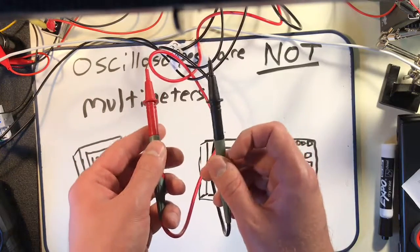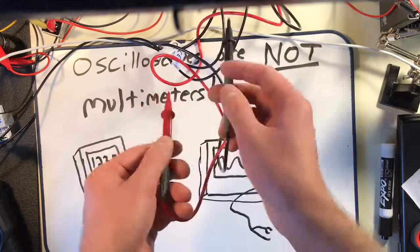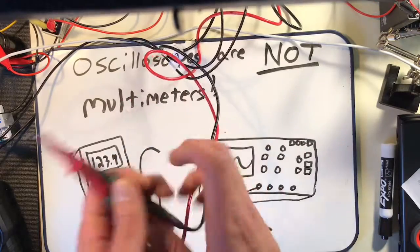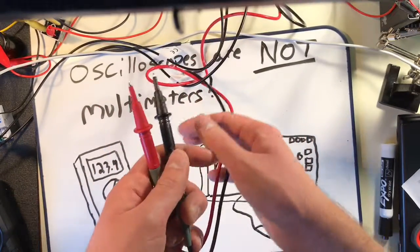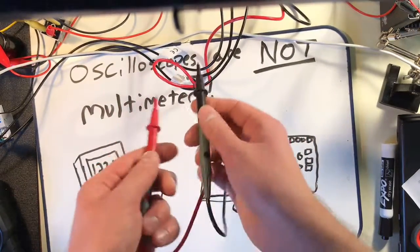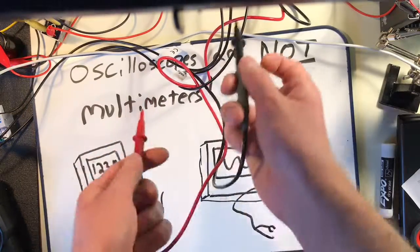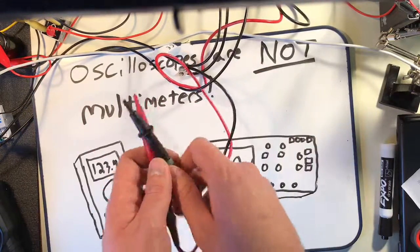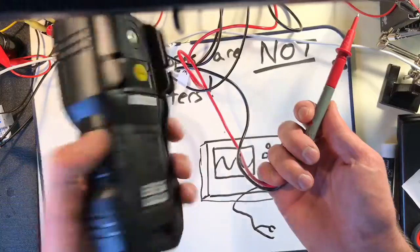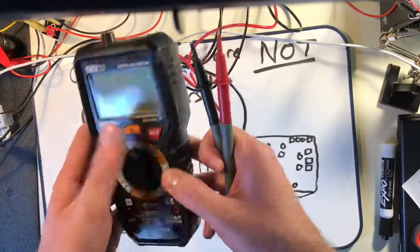But it kind of gives you the impression that you can just poke these anywhere and it'll probably be fine. And for multimeters, that's basically true. You can stick these probes arbitrarily into different potentials and it won't really matter because these are a floating supply and there's not going to be any power going through this.